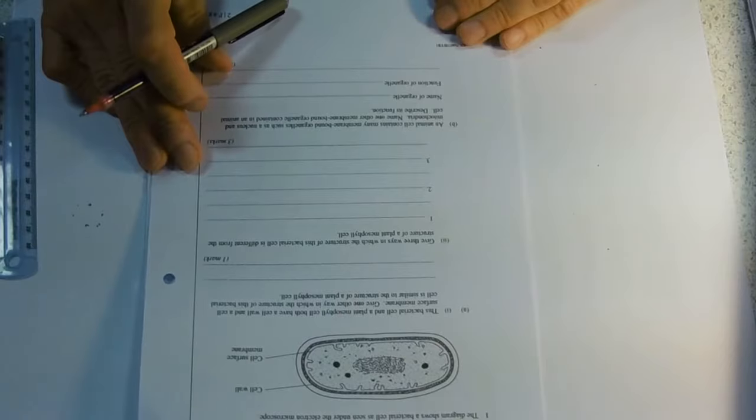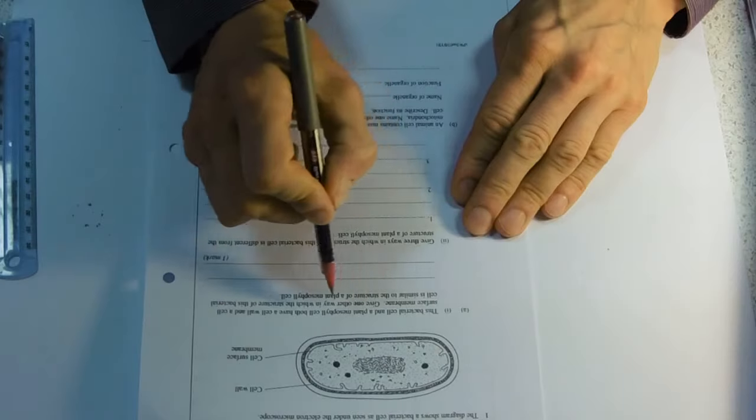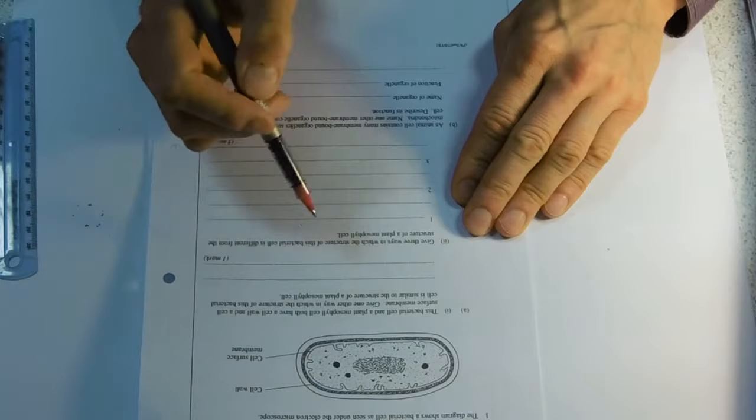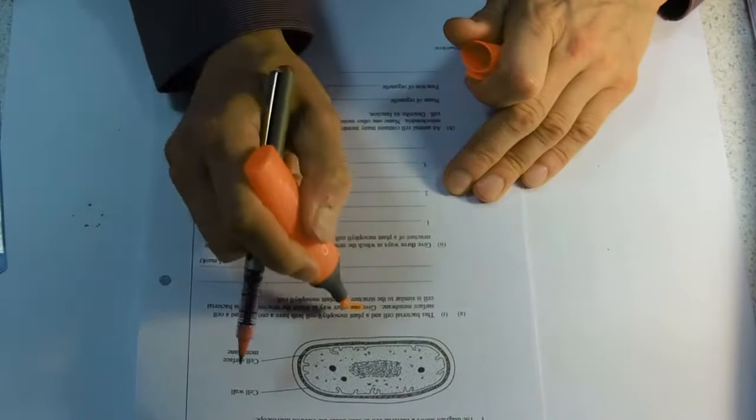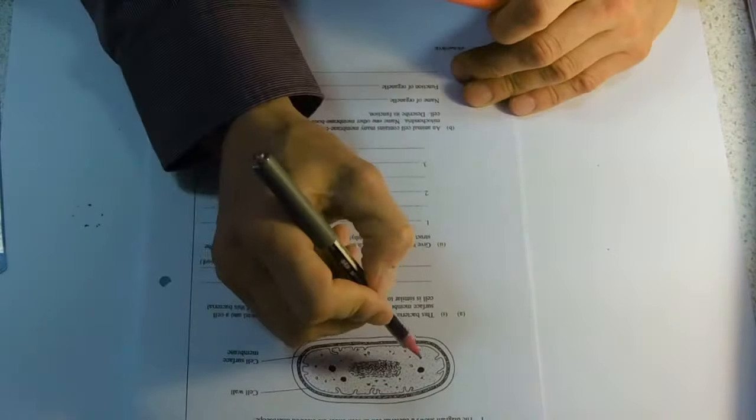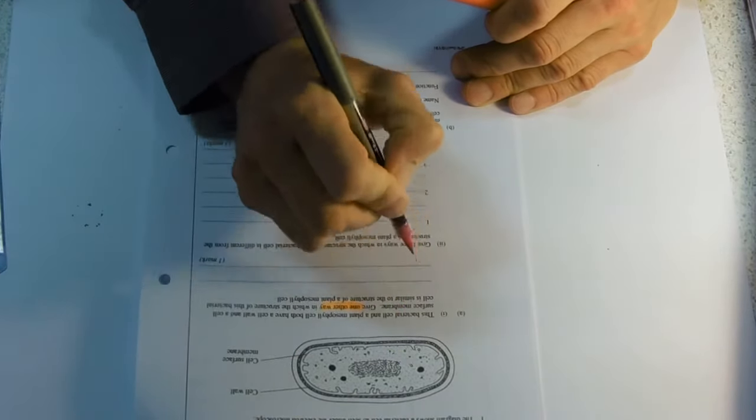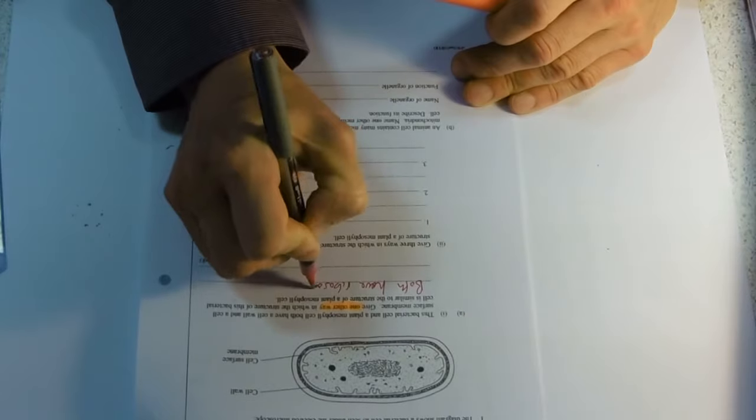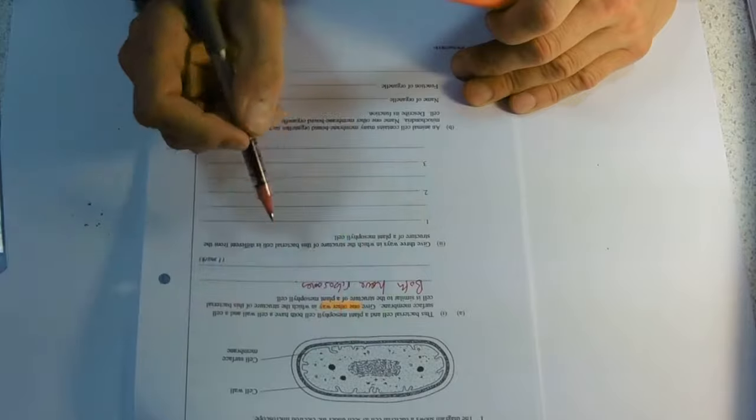Question 1. We have got a bacterial cell. The bacterial cell and plant mesophyll cell both have a cell wall and a cell surface membrane labeled there. So we're giving one other way in which the structure is similar. I can see these little dots here, those are ribosomes. So both have ribosomes. That's the most obvious thing that I can see there.